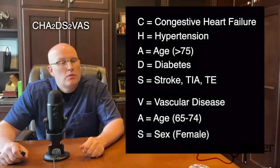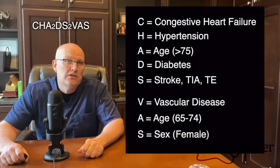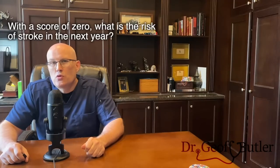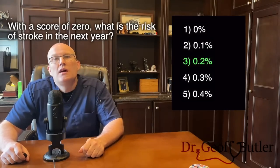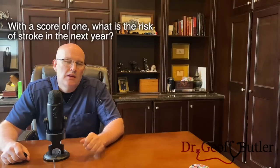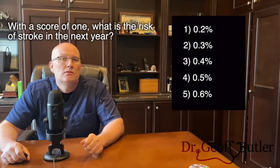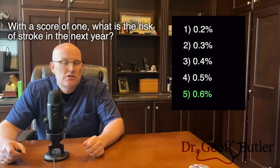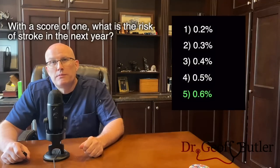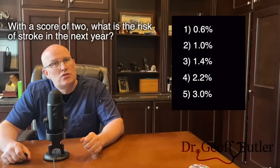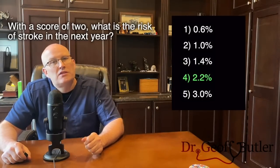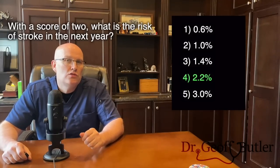Based on that scoring system, we look at the patient's potential stroke risk within the next year. A score of zero corresponds to a 0.2% annual stroke risk. A score of one is 0.6% — studies show it's reasonable to just use aspirin at that level, which is what this patient is on. However, going from one to two risk factors, the risk jumps from 0.6% to 2.2% — almost quadruples — and at that stage we should use a higher level of anticoagulant.